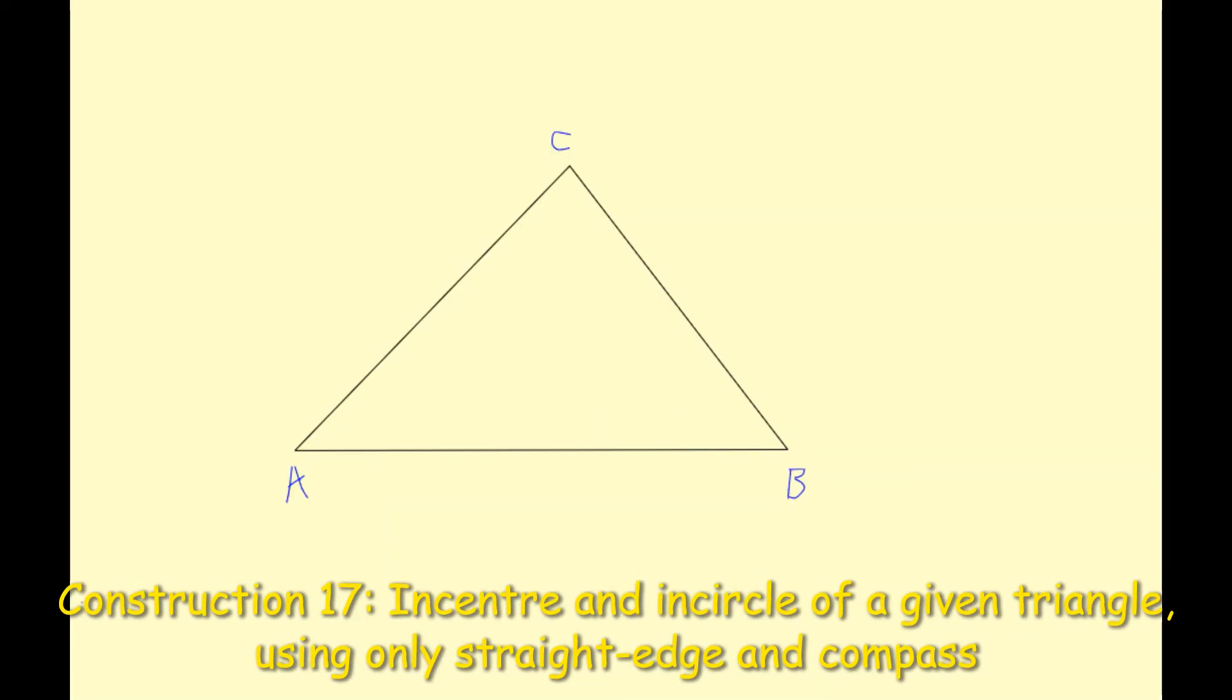This is Construction 17, which asks us to construct the incentre and the incircle of a given triangle ABC. In order to construct this, we need to use the bisector of an angle. If you're having doubts about that, check out Construction 1, which will help you out.